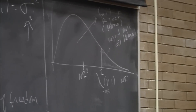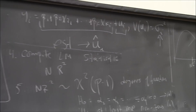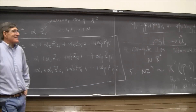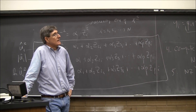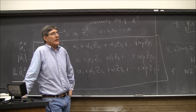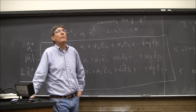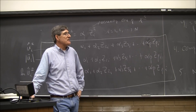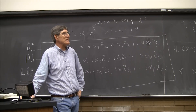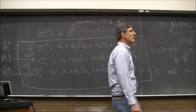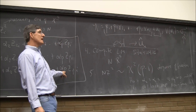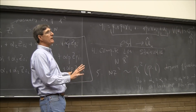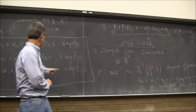Questions? Yes — is there a chi-square table? Yes, in the back of the book. Don't try to look up 10%, because the table only has 5% and 1% values. What is p? P is this number here — the number of things you put into this auxiliary regression. In general p will be the same as k, but it may not be.